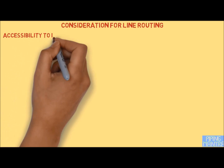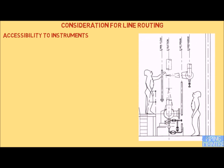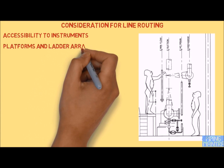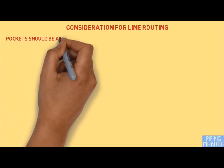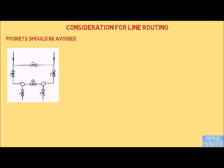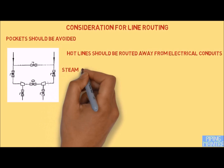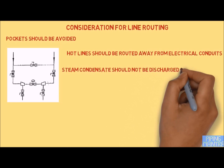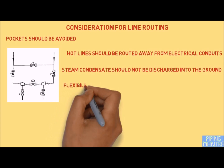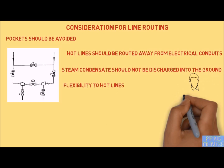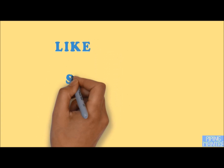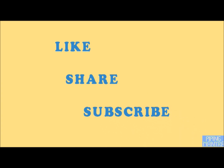All instruments — whether inline or online — and control valves should be readily accessible from grade level or from a permanent platform. Adequate platform and ladder arrangements should be provided for column manways. Piping pockets should be avoided unless specified. Hot lines should be routed away from electrical conduits, and steam condensate should not be discharged into the ground in the vicinity of electrical conduits. Hot lines should be routed with flexibility in concurrence with the stress engineer. Sample point piping should be as short as possible.